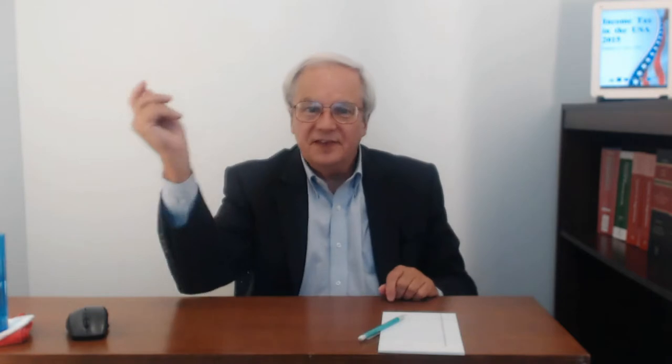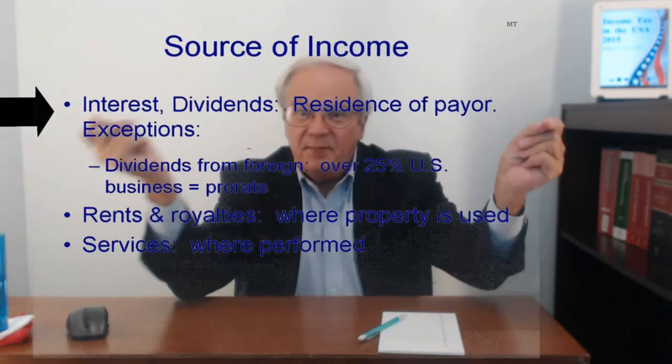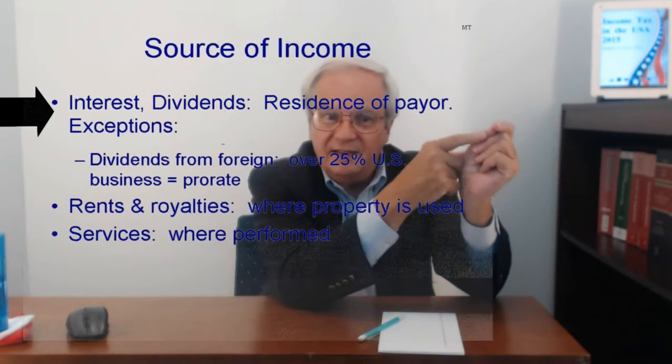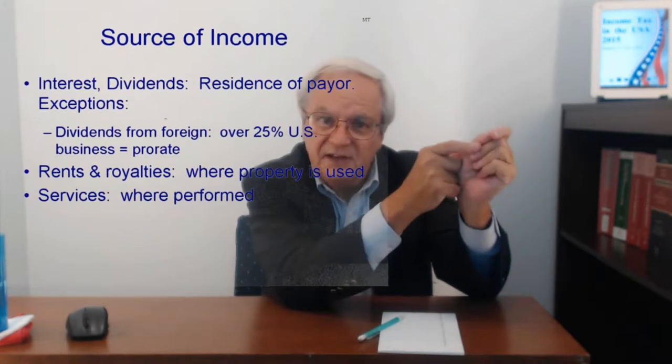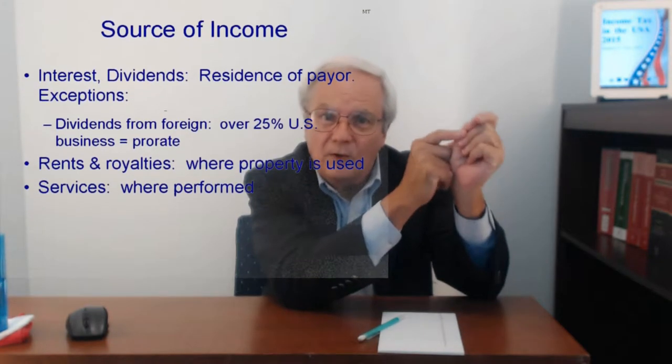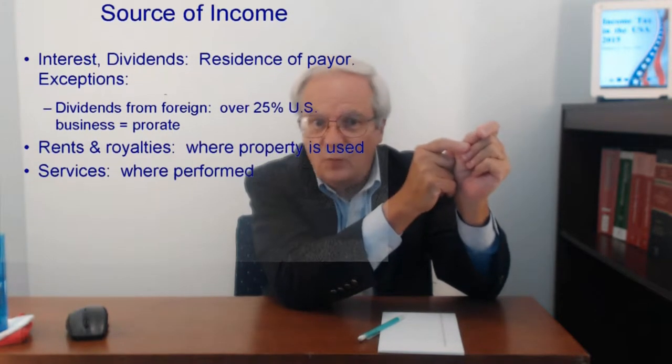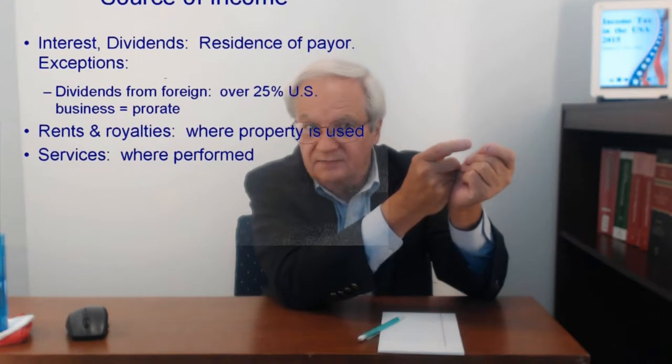The rules vary by type of income and they make a lot of sense. Dividends and interest are sourced to where the payor of the dividends is resident. Thus, if Sal is a resident of Italy and pays Phil a thousand dollars of interest, Phil has a thousand dollars of foreign source interest income, whether Phil's resident or not.